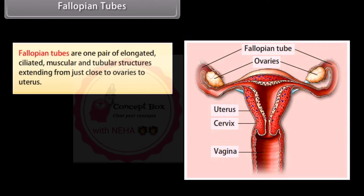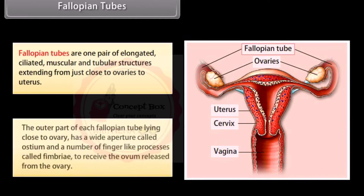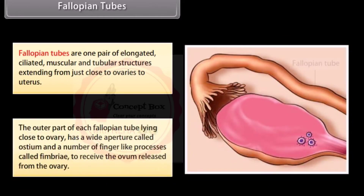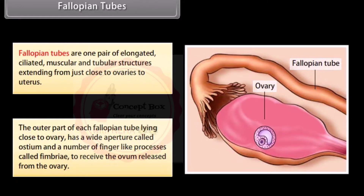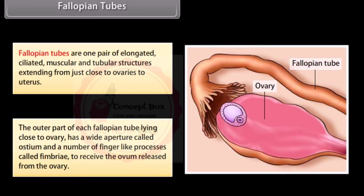Fallopian tubes are one pair of elongated, ciliated, muscular, and tubular structures extending from just close to the ovaries to the uterus. The outer part of each fallopian tube lying close to the ovary has a wide aperture called the ostium and a number of finger-like processes called fimbriae, to receive the ovum released from the ovary.